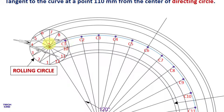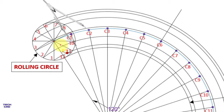Take the compass and open it to the radius of the rolling circle, which is 25 mm. Put it at C1 and mark an arc — this represents the first point P1. In the same way, take your compass again, put it at C2, open it to the radius of the rolling circle, and mark an arc — this represents point P2.